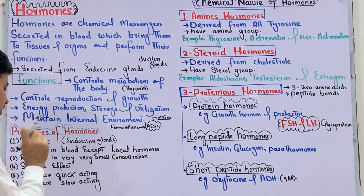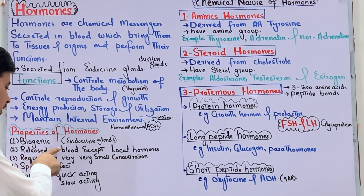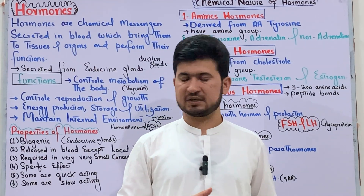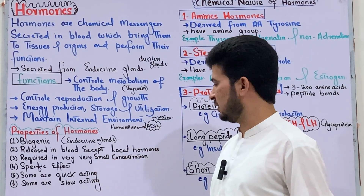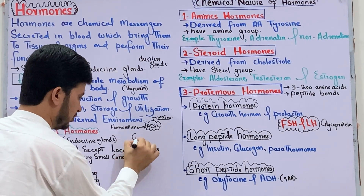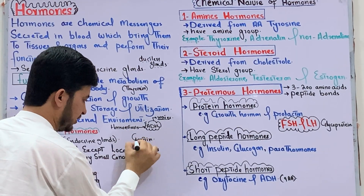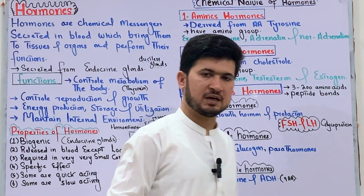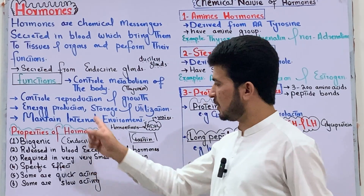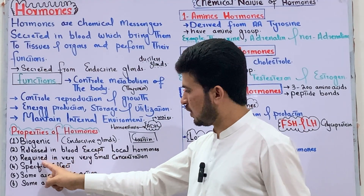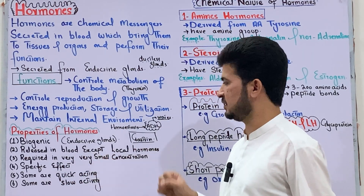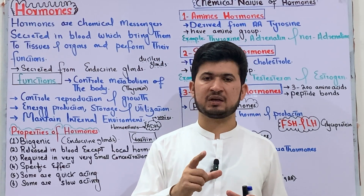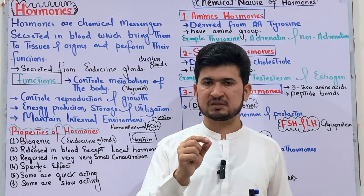The second property: hormones are released into the blood, except for local hormones. Some hormones are secreted into the blood, but local hormones — for example gastrin — are secreted locally in the stomach and not into the blood. The third property: hormones are required in very, very small concentrations to produce their full effect.